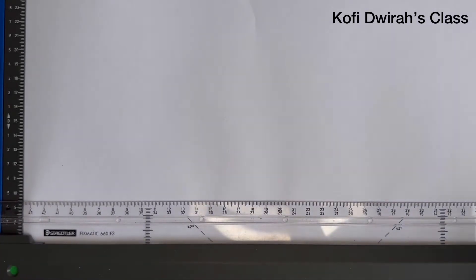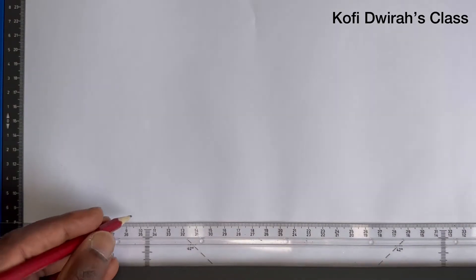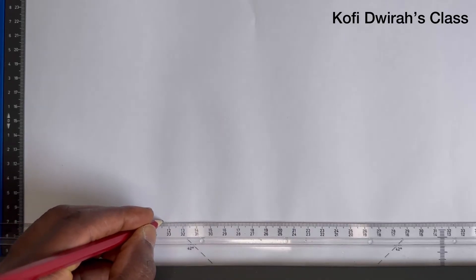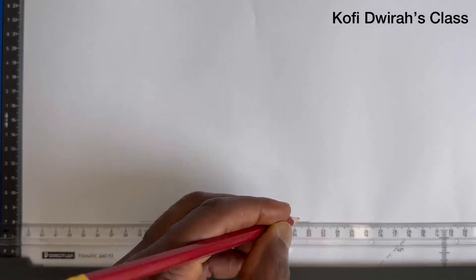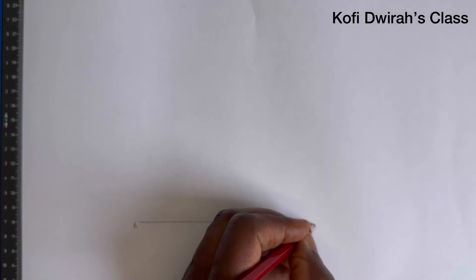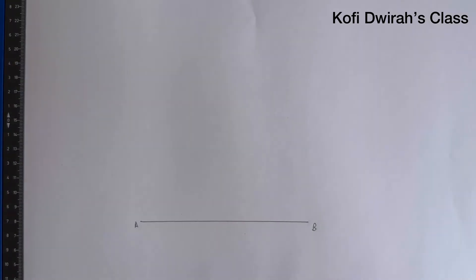We start by drawing one side which is 120 millimeters, which is 12 centimeters. We have this side to be point A and here point B. One angle is given which is 45 degrees.